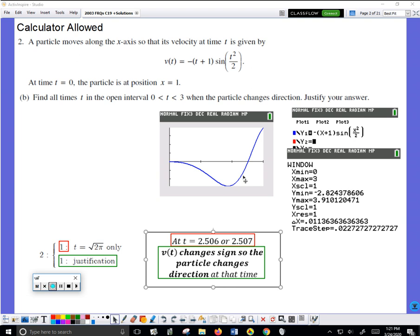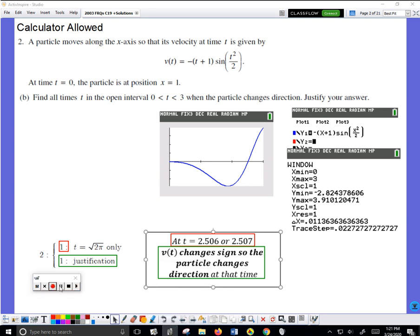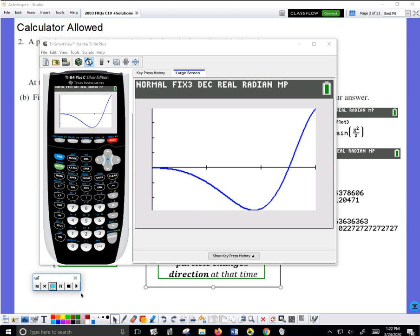We could show that on the calculator just to make sure that makes sense. In the calculator, if I hit trace, the calculator will display the various velocities as I move along. All these velocities are negative. You can see that here.